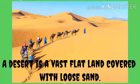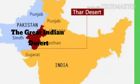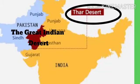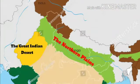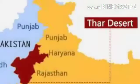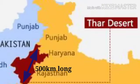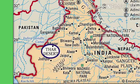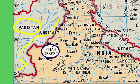A desert is a vast flat land covered with loose sand. The great Indian desert is also called as the Thar Desert and it is situated to the west of the Northern Plains. It is about 500 kilometers long. The Thar Desert stretches from the Aravalli hills in the east to the border of Pakistan in the west, and from the Rann of Kutch in the south west to the border of Haryana.